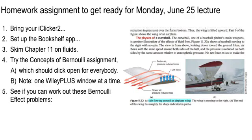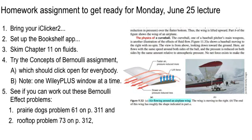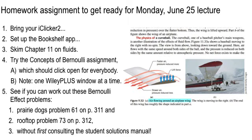Another thing — in the book itself there are some nice problems. I want to see if you can try the Prairie Dogs problem, number 61 on page 311, and then number 73, the Rooftop Problem, on page 312. Try to do it without first looking at the Student Solutions Manual. We'll talk about both of those in class, hopefully, on Monday afternoon.